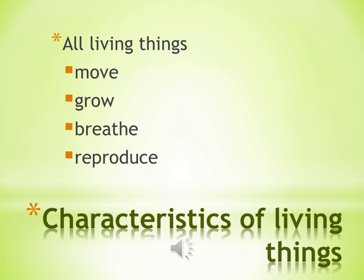Similarly, all animals reproduce — they give birth to their babies, and some animals lay eggs through which their babies come out. These are some characteristics shown by all animals. All living things start their life as a baby and grow with time. They live for a number of years and die after a certain lifespan. The living world includes plants, animals, insects, worms, birds, and human beings.